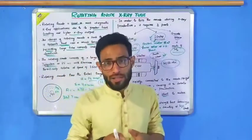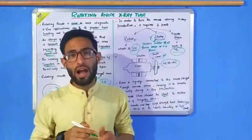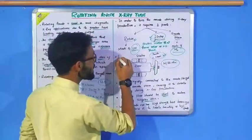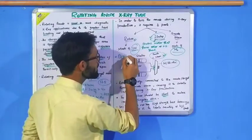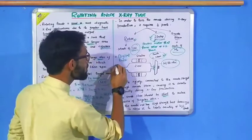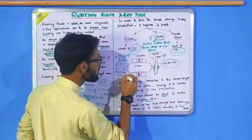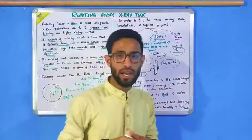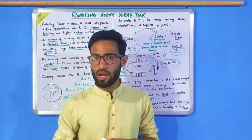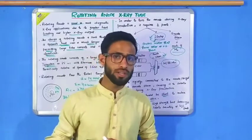These ball bearings allow it to rotate smoothly at high speeds. Regarding applications, the rotating anode x-ray tube is used in digital radiography and in computed tomography x-ray tubes. I hope today's lecture was clear. If you have any queries or doubts, please leave them in the comment section.